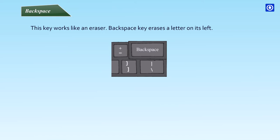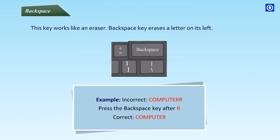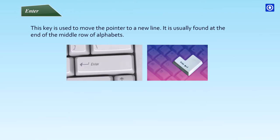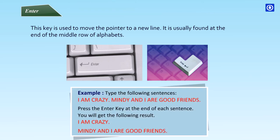Backspace and Enter: the backspace key is used to delete characters. The enter key is used to move the pointer to a new line. It is usually found at the end of the middle row of alphabets. Example — type the following sentences.